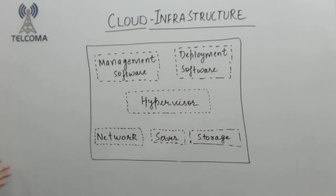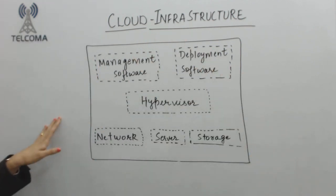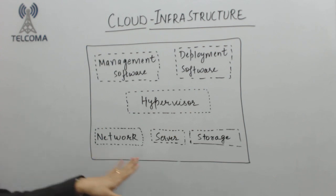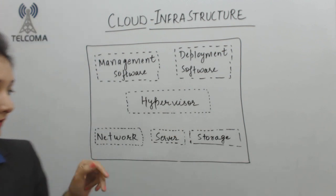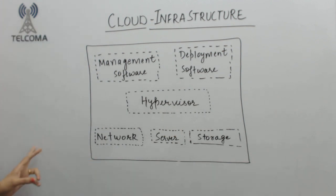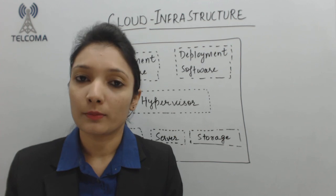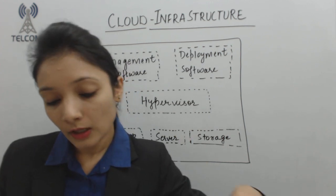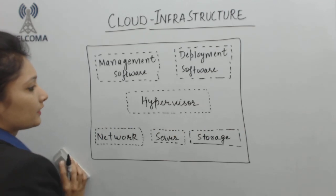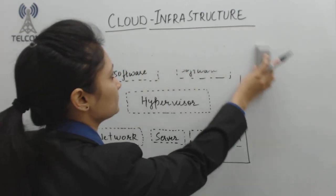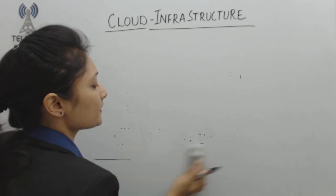This is an overlay of the infrastructure of cloud systems: network, server, storage, the hypervisor, management software, and deployment software. We will study all of these components one by one. The first component we are going to study is the network.